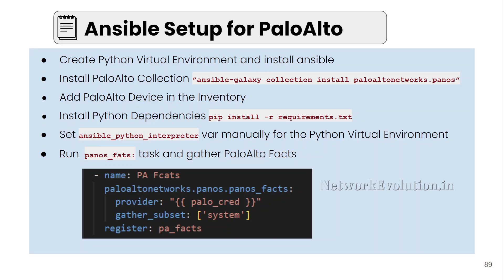The first step is to create a Python virtual environment and install Ansible. By default, Palo Alto collections are not available in the Ansible community package, so you have to install it manually. After that, we'll see how to add a Palo Alto device into the inventory and add the credentials as a variable. There are some Python dependencies for running the Palo Alto module — we'll see how to install those. Then we need to set the Ansible Python interpreter setting for the virtual environment, and finally we'll try running the PanOS Facts module for gathering facts.